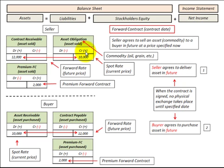I'll go through an example of how to record a forward contract on a balance sheet from both the seller's perspective and the buyer's perspective. We'll look at the contract date, when the asset is exchanged, and revaluation or amortization of any discount or premium required for the contract. When we're referring to an asset on this contract, we're really looking at a commodity such as oil, grain, or any other commodity.